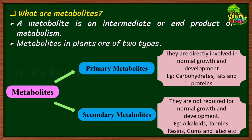A metabolite is an intermediate or end product of metabolism. Catabolism, anabolism, and several life processes involve chemical reactions occurring in our body — all together called metabolism. During or after metabolism, several intermediate or end products are formed, and those chemicals are called metabolites. Metabolites are divided into two categories.